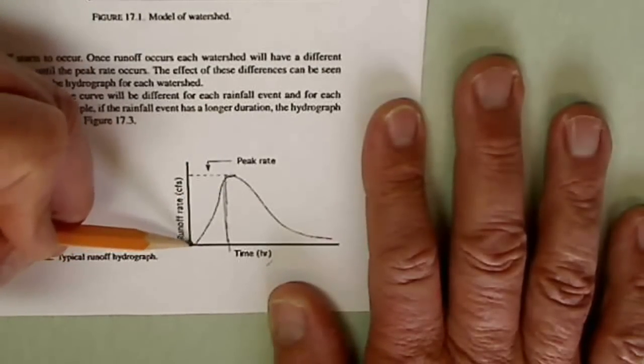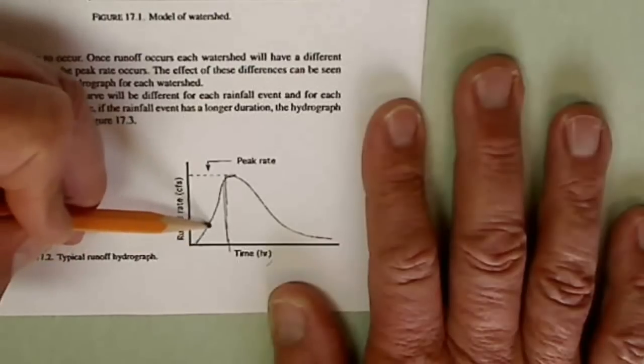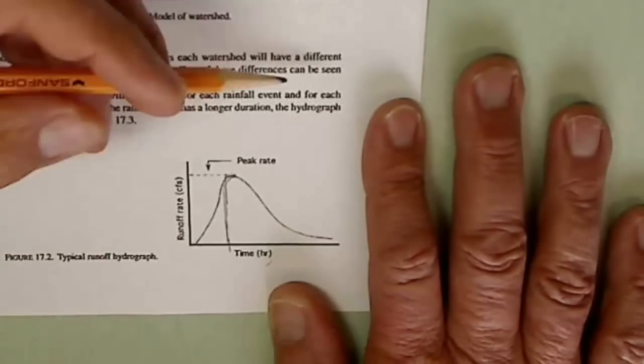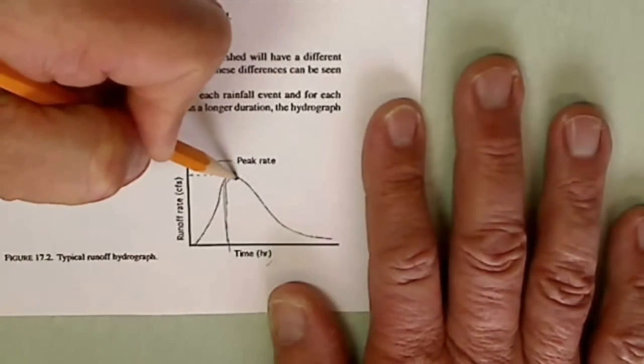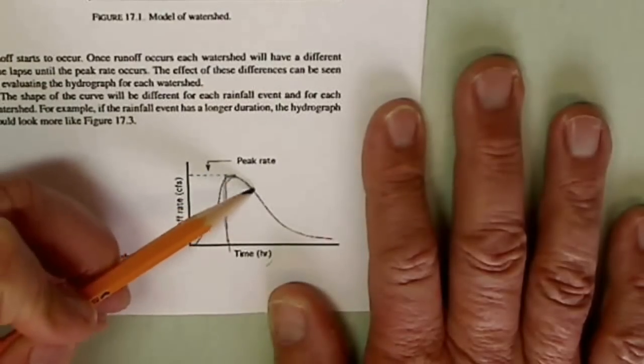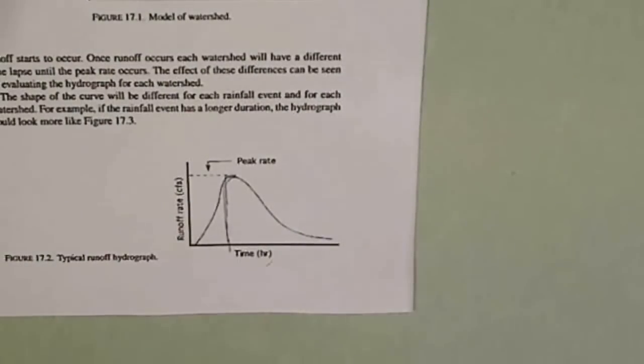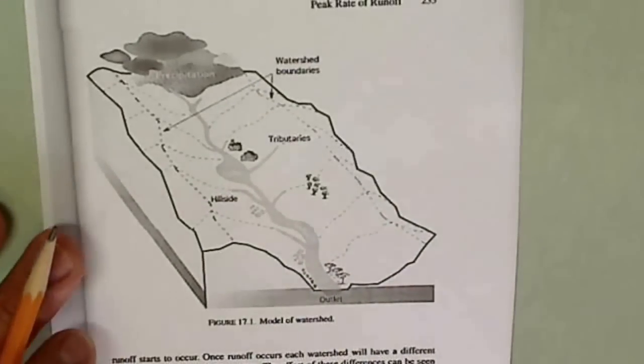In other words, the actual runoff is very slow in the beginning, and then it gets up to a peak rate that's going to be determined by the intensity of the storm and the duration. And then, of course, as the storm tapers off, so does the runoff rate. I hope that's helpful and gives you a little bit of a preview of where we're going to be going in the next chapter.